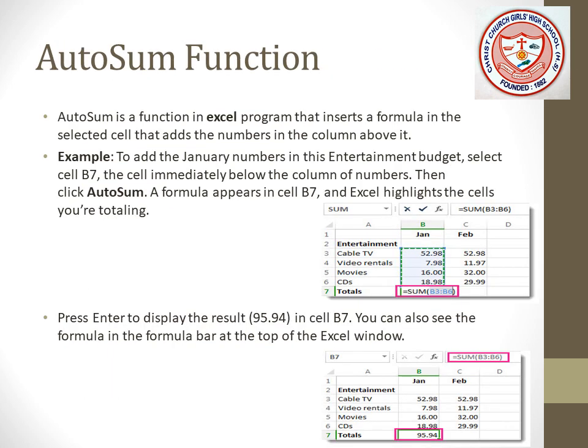AutoSum is a function in Excel that inserts a formula in the selected cell that adds the numbers in the column above it. AutoSum takes all the numbers in the columns and sums them. For example, to add the January numbers in the entertainment budget, select cell B7.